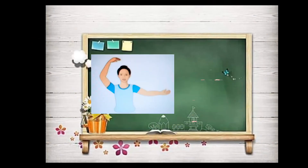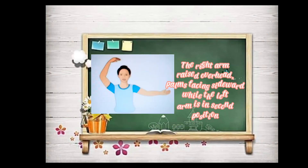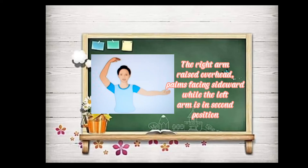Third position: the right arm is raised overhead, palms facing sideward, while the left arm is in second position.